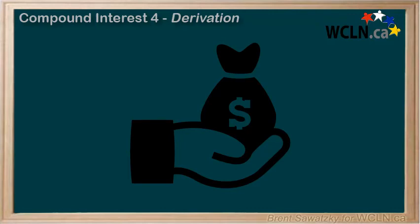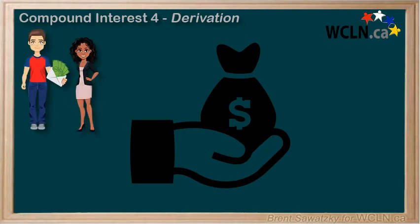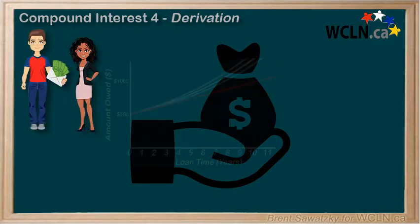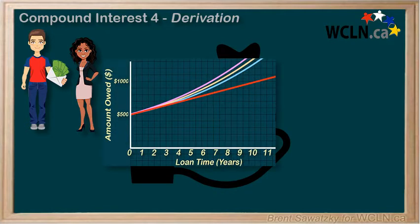At this point, you understand the concept behind compound interest and why it's more fair in many situations. You can also visualize the difference in growth patterns between simple interest, linear, and compound interest, exponential.